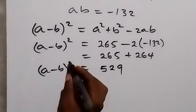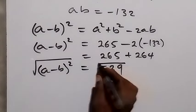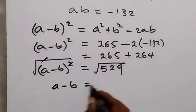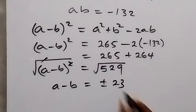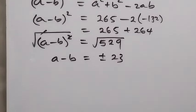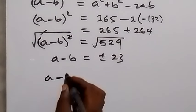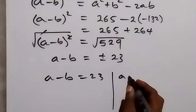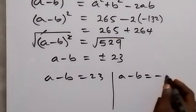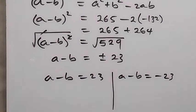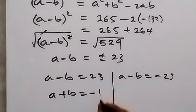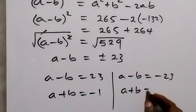Taking the square root on both sides, the square root of 529 gives us a minus b equals plus or minus 23. So we have two cases: the first is a minus b equals 23, and the second is a minus b equals minus 23. We now solve these together with equation 3, which is a plus b equals minus 1.